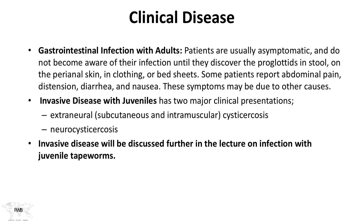Let's talk about clinical disease. Gastrointestinal infection with adults: patients are usually asymptomatic and do not become aware of the infection until they discover proglottids in the stool, in the perianal skin, on clothing, or on bedsheets. Some patients will report a degree of abdominal pain, distention, diarrhea, or nausea, but these symptoms may be due to other causes. So whenever a patient presents with a diagnosis of Taenia Solium, we want to be cautious about whether the symptoms are due to some other cause.